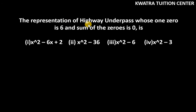It says the representation of highway underpass where one zero is 6 and sum of zeros is 0. So basically, we have α+β=0. If α is 6, then the value of β is minus 6. This is our alpha.